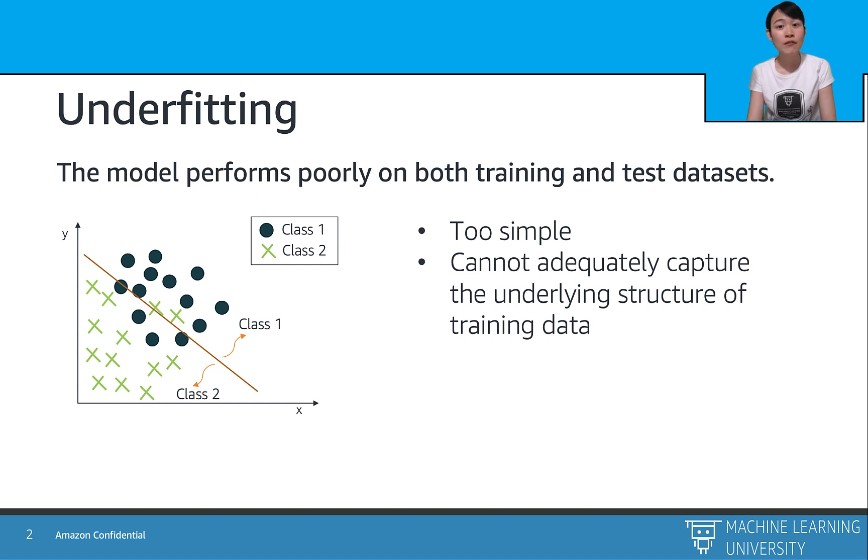Maybe you should think of adding more features or improve the complexity of your models. For example, for neural networks, probably you can add more layers or more units in layers. We also call the underfitting model as a high bias model. From a statistic point of view, its results show systematic lack of fit in certain regions.